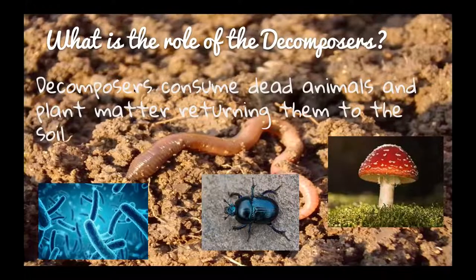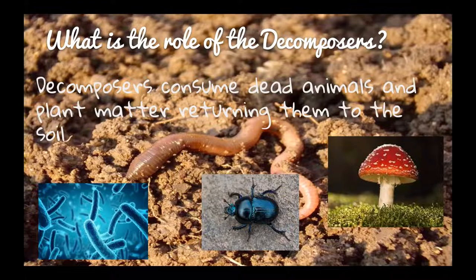And then we have our decomposers. It doesn't matter where you are in the food web — decomposers are going to enjoy you in the end. Decomposers consume dead animals and plant matter and return them to the soil. They break down the chemicals of all living things. This includes bacteria, different insects, worms, beetles, and fungi. Eventually, decomposers are going to break everything down and start the cycle again.